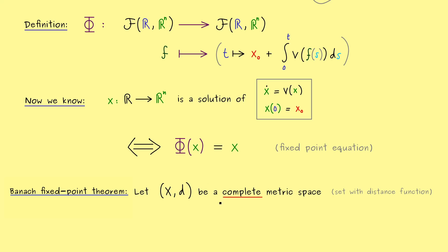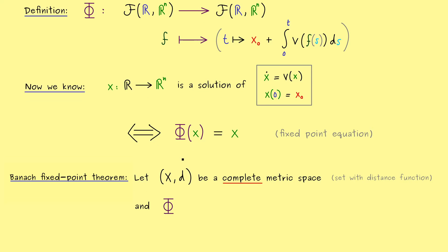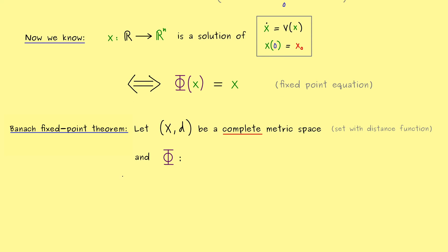A typical example of such a complete metric space is R^n together with the standard Euclidean distance function. However, in this context this example is not enough, because in the end we want to apply this theorem for the function space here. Therefore, maybe we can already choose the same name for the function we want to find fixed points for. Hence here phi is a map from X into X. And moreover, phi has to be a so-called contraction. This simply means that it makes distances smaller.